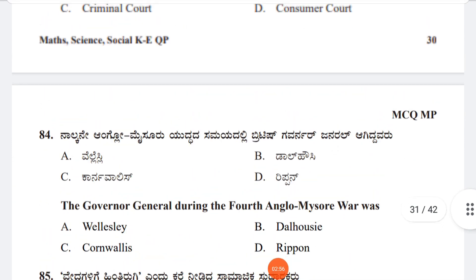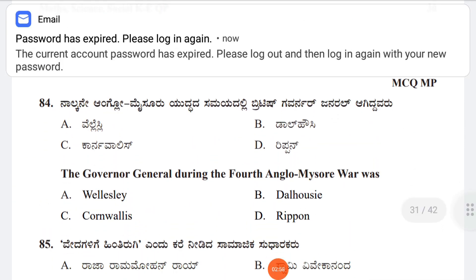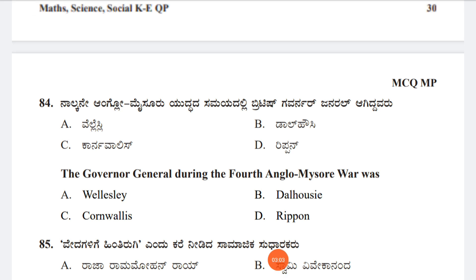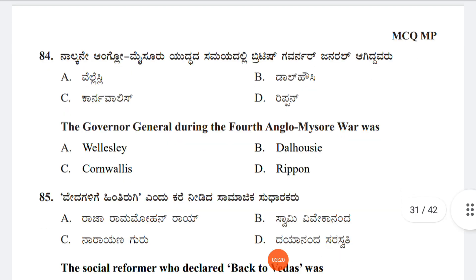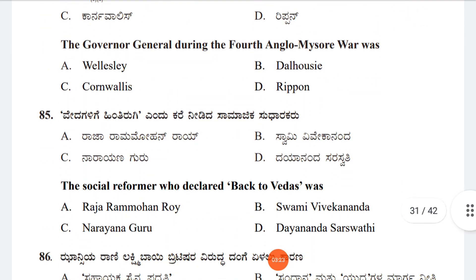Question 84: Who was the Governor General during the Fourth Anglo-Mysore War? Option A: Wellesley, Option B: Dalhousie, Option C: Cornwallis, Option D: Ritten. The answer is Option A, Lord Wellesley.